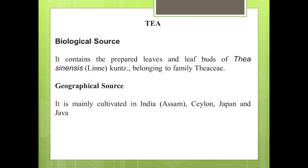Black tea is prepared by collecting the tea leaves and then fermenting them. Fresh leaves are collected, fermented, and after fermentation they are subjected to artificial drying — this is how black tea is produced. Green tea is obtained by placing the leaves in a copper vessel and then drying them artificially.